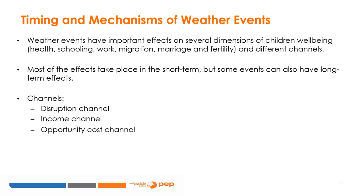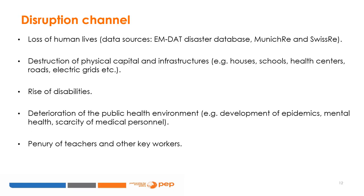The most evident is probably the disruption channel, concerned in particular with the more severe weather events. Besides that, other effects pass through the income channel and the opportunity cost channel. Weather shocks have direct and immediate effects on economic outcomes when they are very severe — referring in particular to extreme weather events with disruptive power, like severe droughts, floods, and tropical storms.